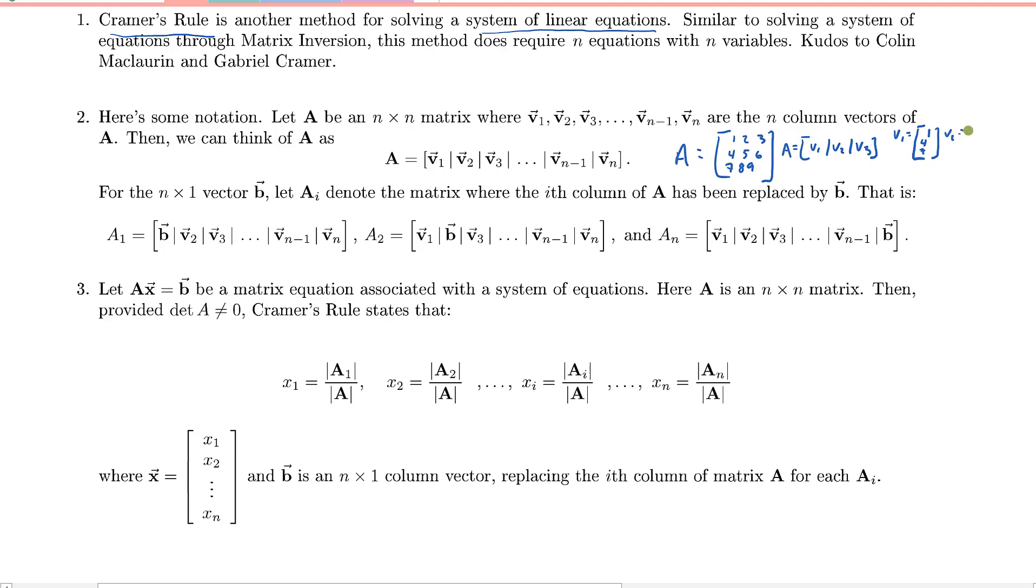V2 would be the column vector 2, 5, 8. And V3 would be the column vector 3, 6, 9. And so we can think of A then as these three column vectors joined together. So that's what this notation means, and it can look a little bit intimidating at first.